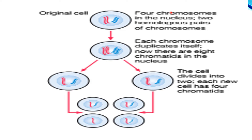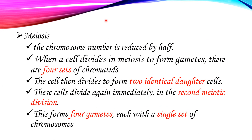In the nucleus, there are four chromosomes — two homologous pairs of chromosomes. In meiosis, the chromosome number is reduced by half. That means the chromosome number is halved through the process of meiosis.